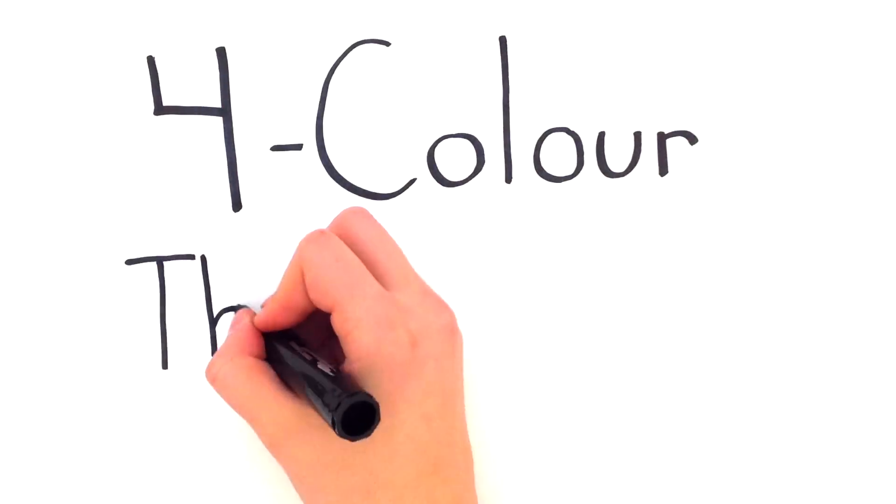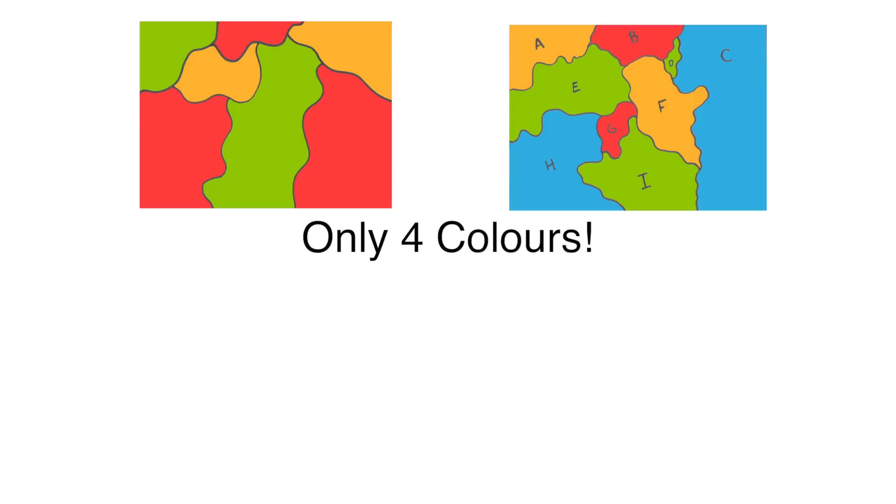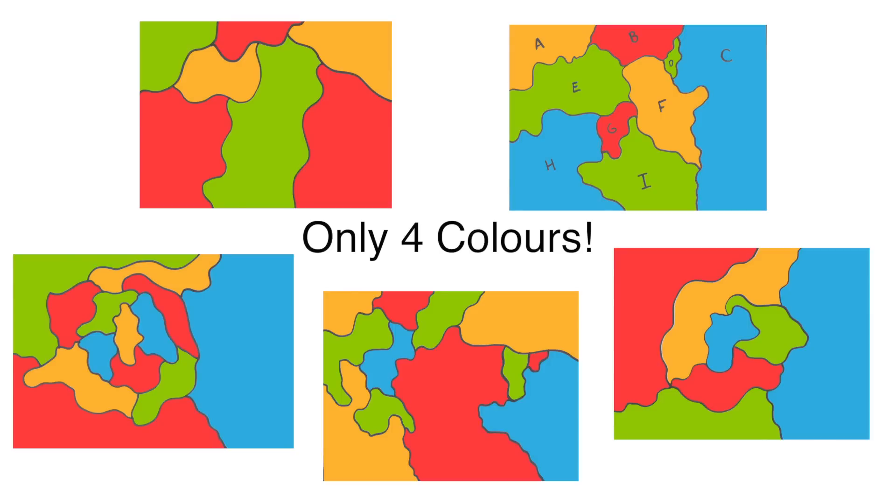This brings us to the four color theorem. Essentially it states only four colors are required to color any map such that no two adjacent regions have the same color.